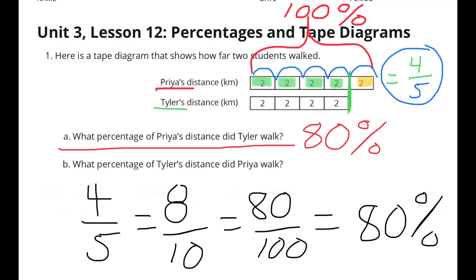Here is another way to look at it. Tyler walked 4 out of 5, which is 8 out of 10 or 8 tenths, which is the same as 80 over 100 or 80%.